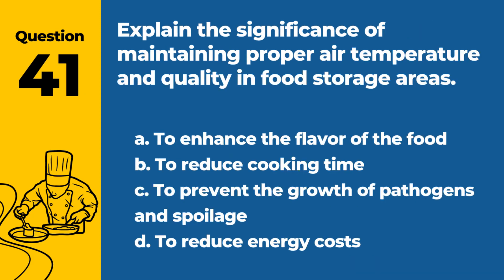Question 41. Explain the significance of maintaining proper air temperature and quality in food storage areas. A. To enhance the flavor of the food. B. To reduce cooking time. C. To prevent the growth of pathogens and spoilage. D. To reduce energy costs. Answer: C. To prevent the growth of pathogens and spoilage. Proper air temperature and quality in food storage areas are crucial to prevent the growth of pathogens and spoilage of food.